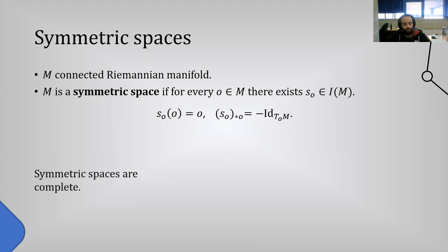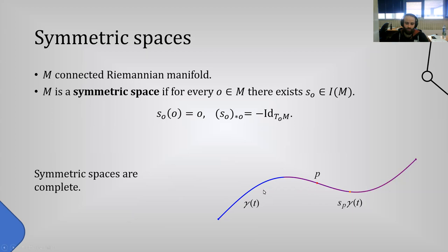Since an isometry is determined by its value at a point and the differential of its value, this isometry is unique and it's also an involution, so s squared is the identity. We call this the geodesic symmetry. From the fact that this symmetry reverses geodesics around the point o, it must be an isolated fixed point, which is useful in some proofs. Symmetric spaces satisfy nice properties: they are complete, because given any geodesic gamma on an interval [0,t], we can use the geodesic reflection at the midpoint to extend the geodesic past time t, and we can do this indefinitely to extend any geodesic to the real numbers.